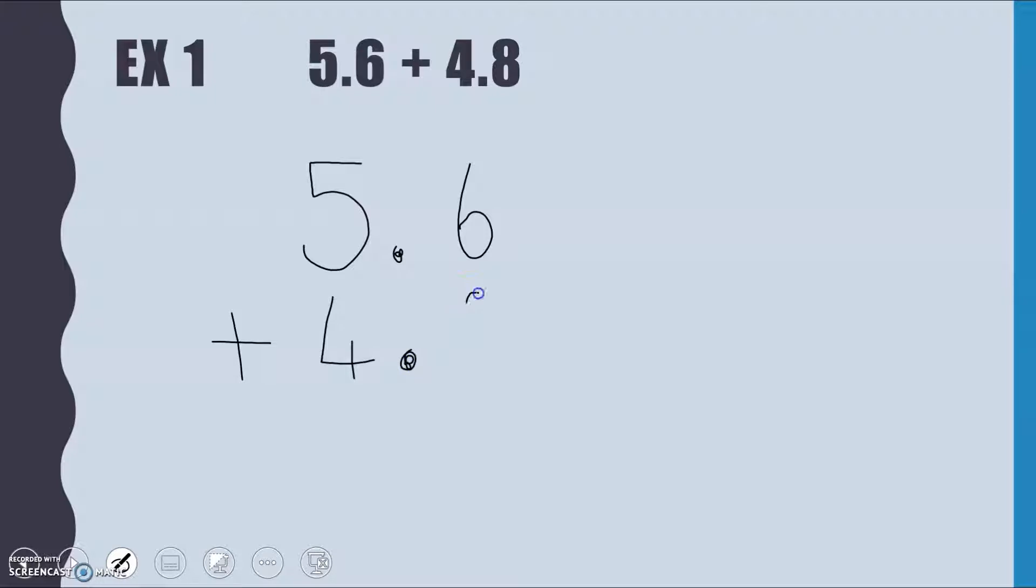And then my 8 going underneath the 6, so you can see that my decimal points are in line. I've only got one digit in front both times—5 over the 4—and one digit after, so 6 over the 8.